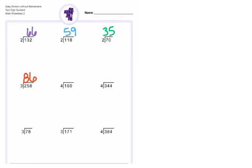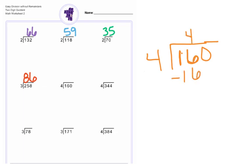Number five, we have 160 divided by four. Four cannot go into one because one is smaller than four, so we go to the next number, which makes it 16. Four times four is 16. Six minus six is zero, and one minus one is zero, so 16 minus 16 is zero. Bring down your zero. Four can go into zero zero times. Our answer is 40.